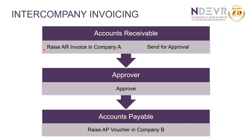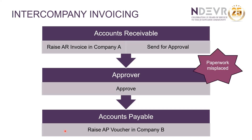For example, company A invoices company B for management fees. The accounts receivable department raises the invoice in company A, then passes the paperwork to a manager who approves it and passes it on to the accounts payable department, who raise an AP voucher in company B. This is a simplified view of the process — there are more steps to intercompany invoicing in reality.